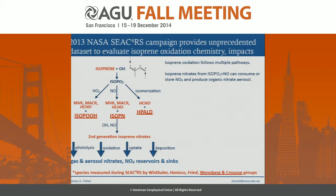In the southeast U.S., there's plenty of NOx around for the peroxy radicals to react with NO, taking up a molecule of NOx and forming isoprene nitrates. The first generation isoprene nitrates can be further oxidized to form a suite of second generation products, and it's really the fate of those that impacts the NOx budget. They can recycle the NOx, deposit to remove NOx from the atmosphere, or be taken up into the aerosol phase, impacting both the NOx budget and the organic nitrate aerosol budget.